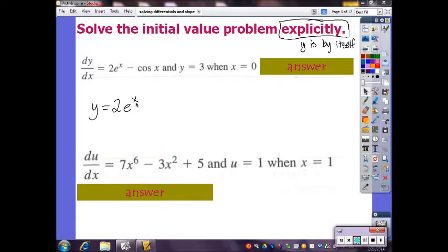So to get the general solution first we have to find the antiderivatives of each term. So 2e to the x, the antiderivative is just 2e to the x because 2 is a constant, so you don't have to use chain rule or anything like that. And then the antiderivative of cosine is sine, and it's negative, so negative sine of x like that.